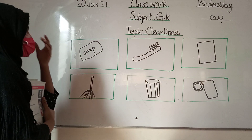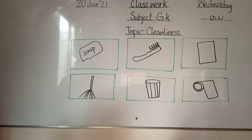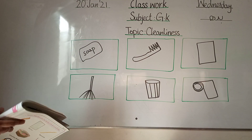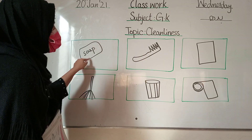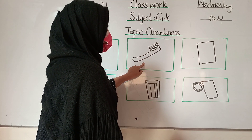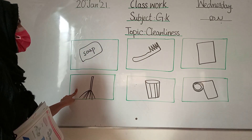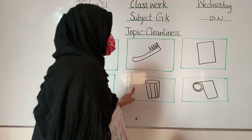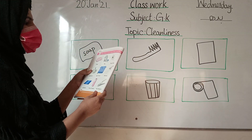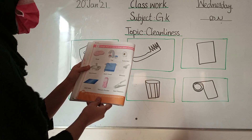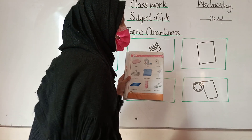Everyone look at the board. These things are called cleanliness items. The first picture is soap, the second is comb, the third is mirror, the fourth is mop, the fifth is dustbin, and the sixth is tissue roll — toilet roll. These are the things we use to keep clean and tidy.